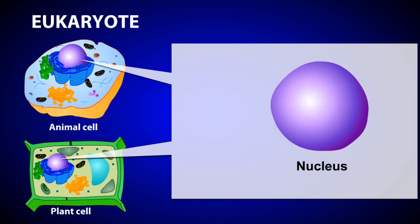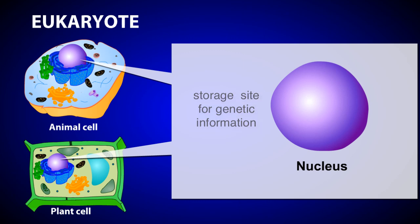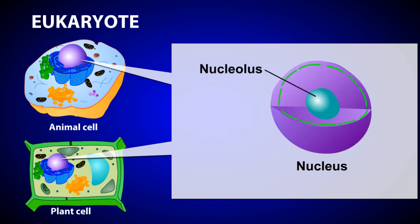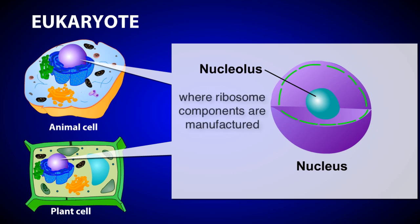Because of its large size, the nucleus is one of the most noticeable structures in the eukaryotic cell. The nucleus is the storage site for most of the cell's genetic information. The dark structure inside the nucleus is the nucleolus, where the components of the ribosomes are manufactured.